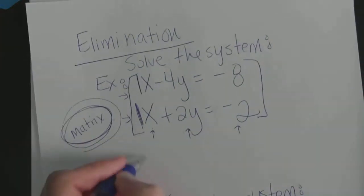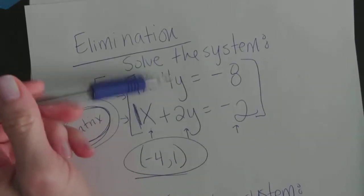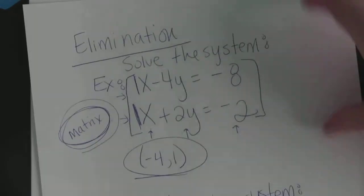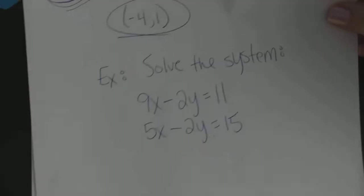So the answer to this system is negative 4, 1. Negative 4, 1. Ta-da! And if you run elimination by hand, you're going to get the same answer. Let's try another one.